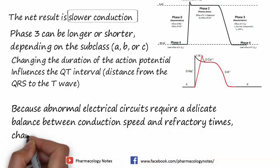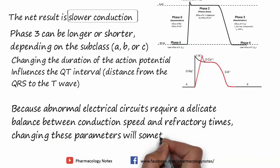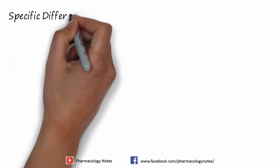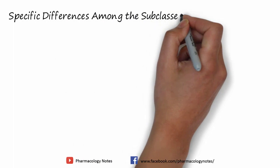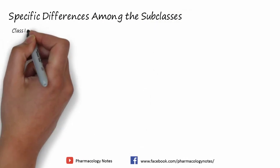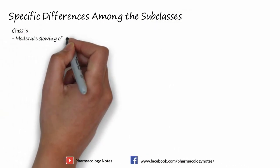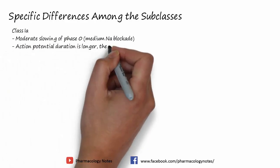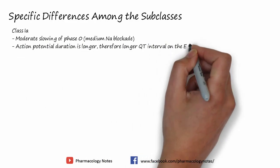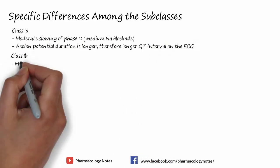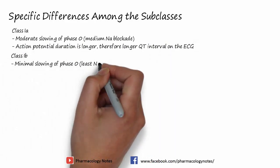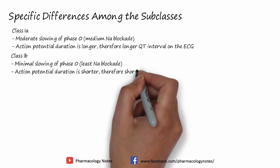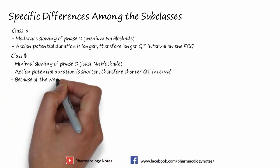Now let's discuss specific differences among the subclasses. Class 1A causes generally moderate slowing of phase 0 — that is, medium sodium blockade — and the action potential duration is longer, therefore producing a longer QT interval on ECG. Class 1B causes minimal slowing of phase 0 with the least sodium blockade, and action potential duration is shorter, therefore a shorter QT interval. Because of the weak sodium blockade, these agents act only on diseased or ischemic tissue and have basically no effect on normal arterial tissues.